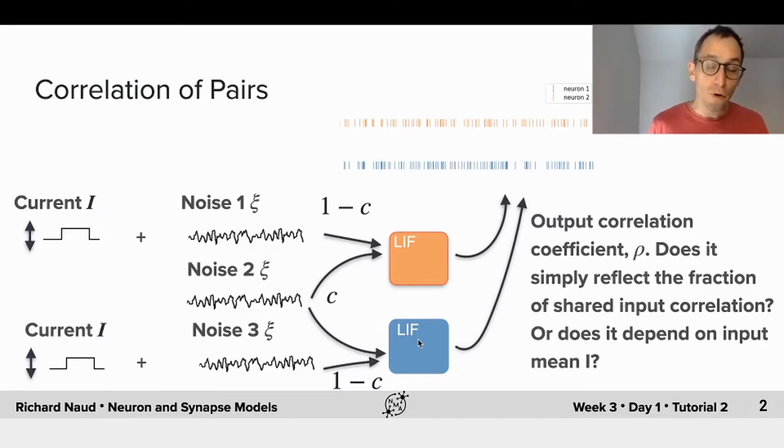The input noise is partially correlated and this input correlation we will use a variable C to denote. Now we're interested to know how this output correlation, the correlation in the number of spikes in a given time bin, depends on the input correlation. We would expect that we could simply find the input correlation from the output correlation, but is this true?